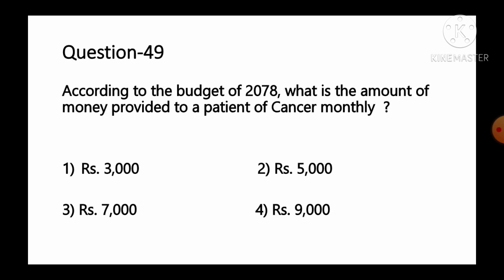Question number 49: According to the budget of 2078 in the Nepal calendar, what is the amount of money provided to a cancer patient monthly? Options: 1 Rs. 3,000, 2 Rs. 5,000, 3 Rs. 7,000, 4 Rs. 9,000. The correct answer is Rs. 5,000 per month is provided to cancer patients. So option number 2 is the correct answer.